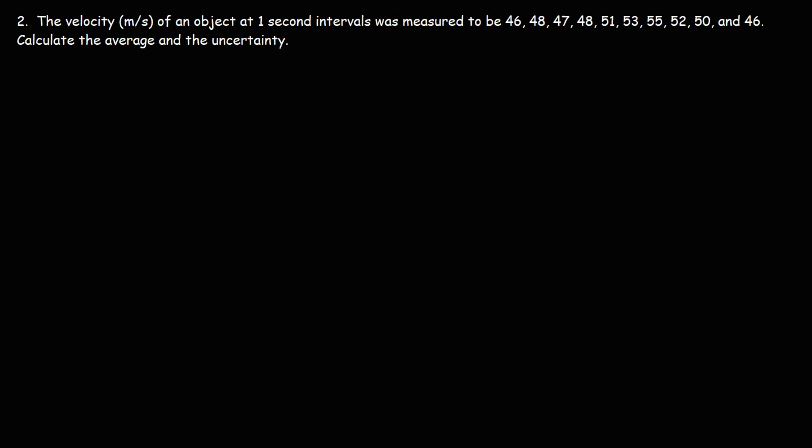Now, for the sake of practice, let's work on another example. Feel free to pause the video if you want to try this. So we're given values for the velocity of an object at one second intervals. We need to calculate the average and the uncertainty as well.